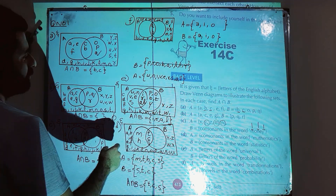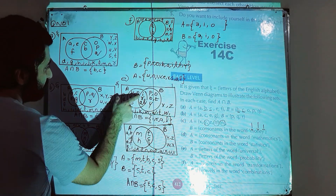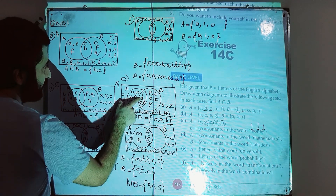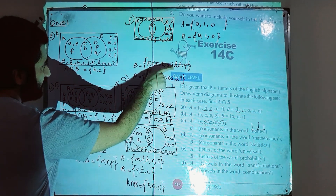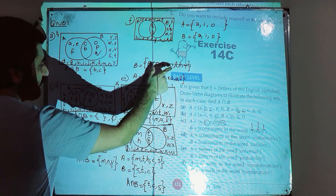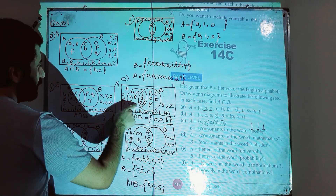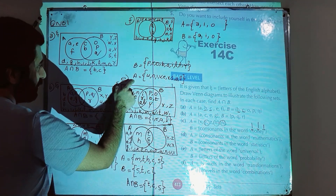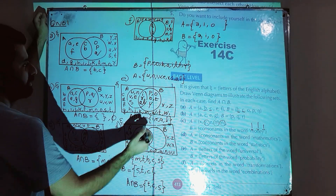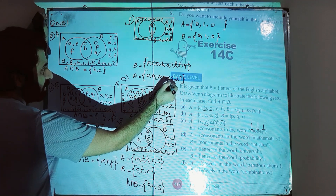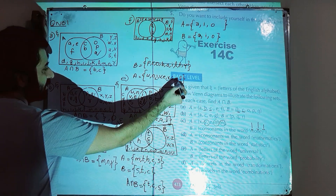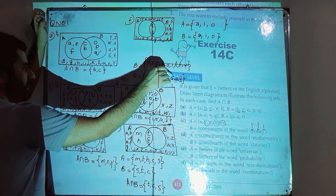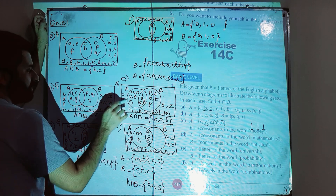The common elements are: i is present in both, so i goes in the overlap; r is present in both sets, so r goes here; a is present in both A and B, and l is also present in both. After placing i, r, a, l in the overlapping part, the remaining elements of A — u, n, v, e, s — are written in the region that only belongs to A.